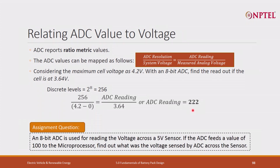Home assignment question: An 8-bit ADC is used for reading the voltage across a 0 to 5 volt sensor. If the ADC feeds the value of 100 to the microprocessor, find out what is the voltage sensed by the ADC across the sensor.